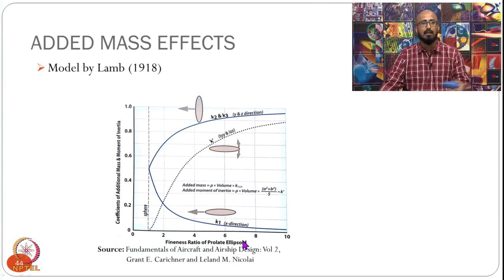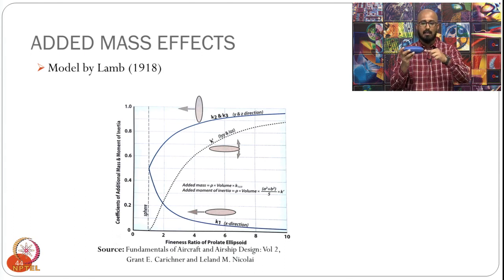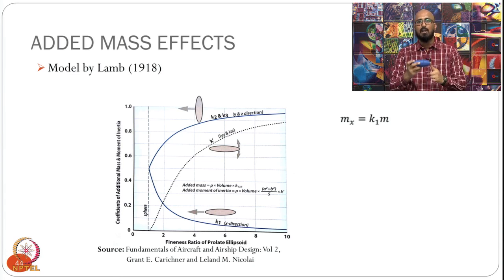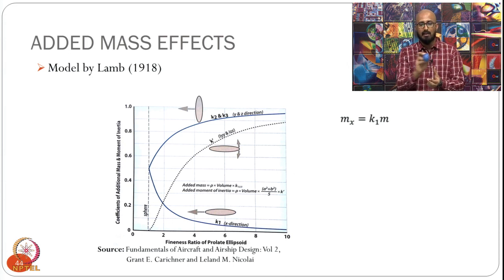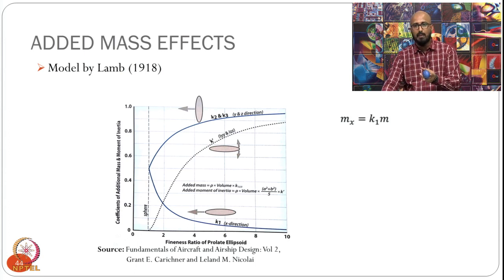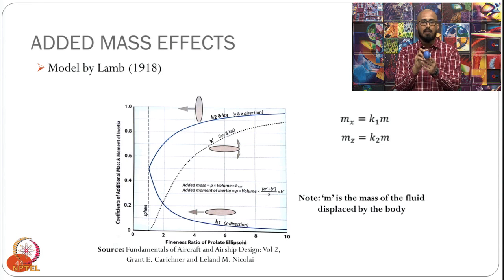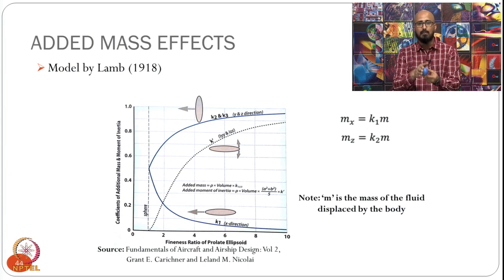There are going to be different added mass coefficients about different axes. If the airship is moving along the x-axis, the added mass about the x-axis is mx = k1 · m, where k1 is the added mass coefficient and m is the displaced volume of fluid — in this case, the displaced volume of air. The airship could also have added mass along the y-direction or lateral direction, giving my = k2 · m. Because the airship is axisymmetric, my equals mz.